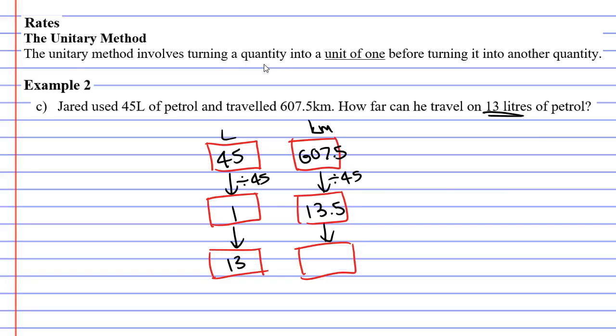Which means on 1 litre I can travel 13.5 kilometres. Then I want to times my 1 by 13. 1 times 13 is 13. Do the same to both sides. 13.5 times 13 gives me 175.5, which means that on 13 litres of petrol I can travel 175.5 kilometres.